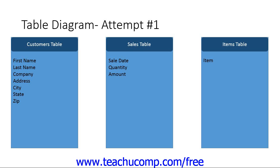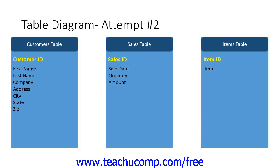Let's look at how your data model will change once you assign primary keys to your table. For example, you need a way to uniquely identify each customer. In the current data model, there isn't any kind of information that would enable you to uniquely identify each record within the customer's table. So you could add an additional field named Customer ID. You would then add a Sales ID to the Sales table and an Item ID field to the Items table. In the sketch shown, each primary key is shown in bold within the table diagram.